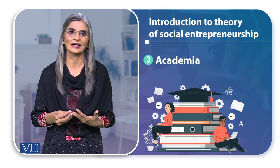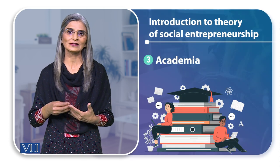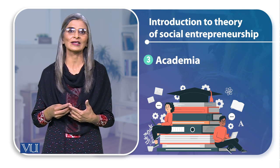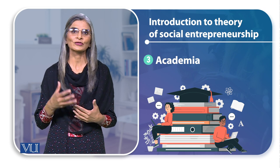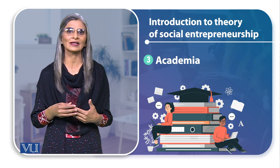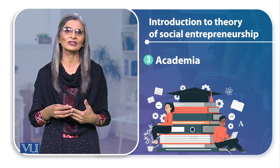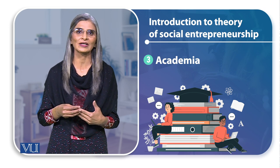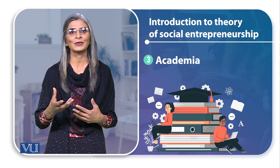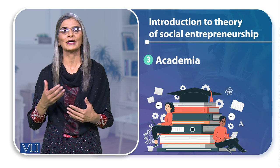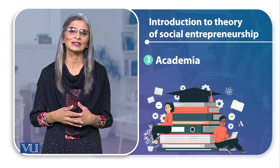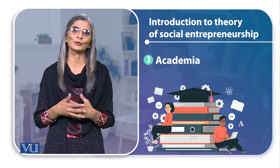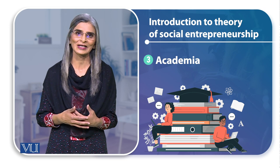तीसरा एक अहम source जो है, वो खुद academia है — teachers, researchers — जो social entrepreneurship के हवाले से courses develop करते हैं, पढ़ाते हैं, research करते हैं और उसको document करते हैं, publish करते हैं। आपके पास जो social entrepreneurship इस course के हवाले से books हैं, यह material जो है, उसका source academia है।